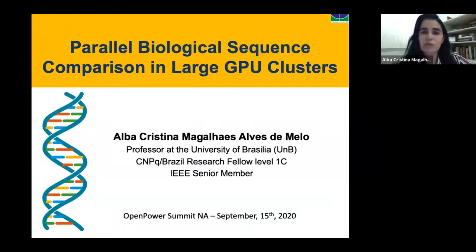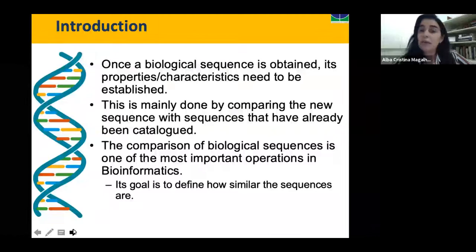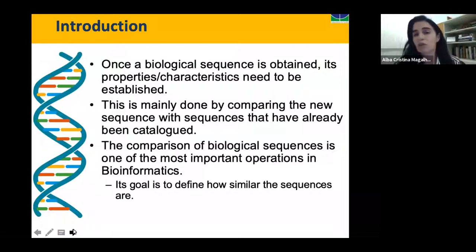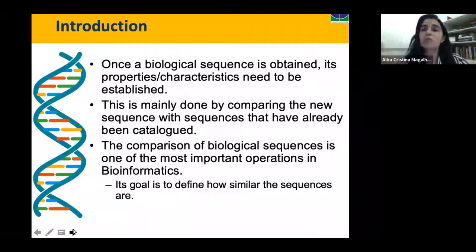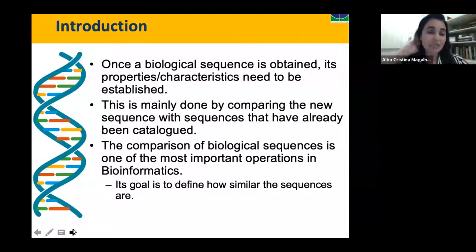We are talking about biological sequences. Once we obtain a biological sequence, we need to establish its properties and characteristics. This is done by comparing the new sequences with sequences for which we already have characteristics and properties. The comparison of biological sequences is one of the most basic and important operations in bioinformatics. The goal is to define how similar the sequences are.